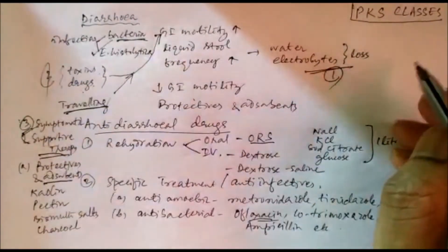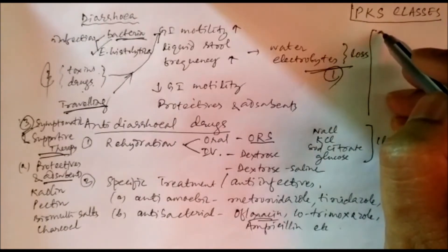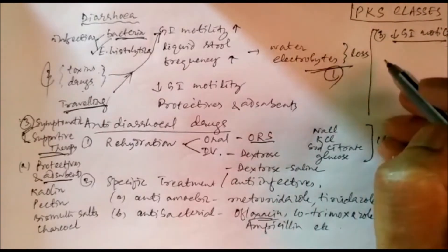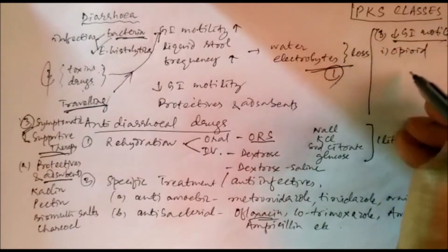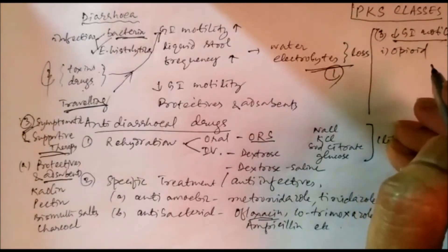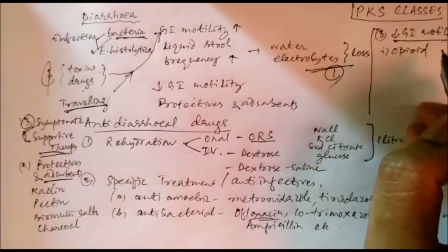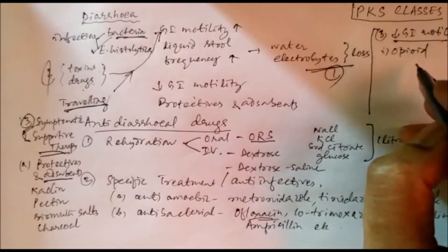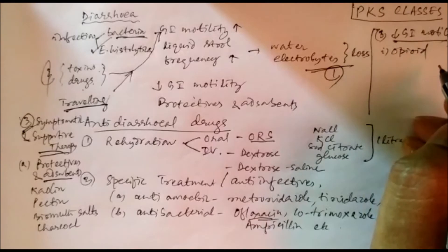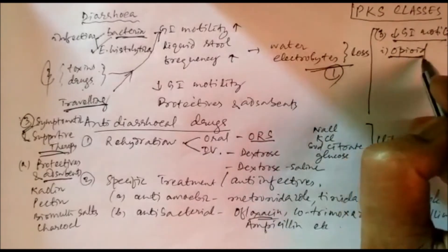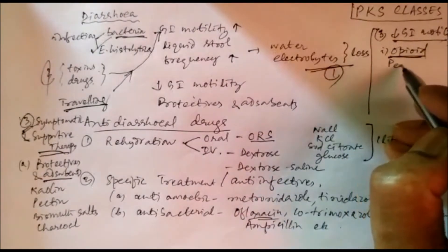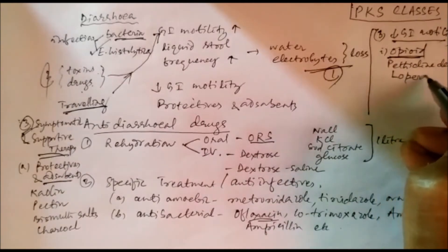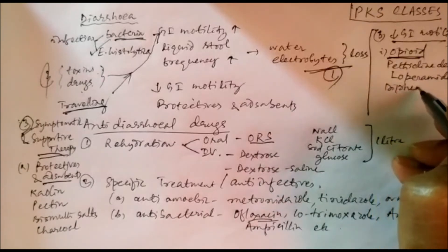In the third category, the second group is drugs which can reduce GI motility. GI motility is mainly reduced by opioid drugs. There are three endogenous opioids: enkephalin, endorphin, and dynorphin. Enkephalin decreases GI motility but is degraded by enkephalinase. Opioid derivatives — mainly the pethidine derivatives — reduce GI motility, such as loperamide, the widely used drug, and diphenoxylate.